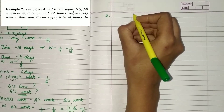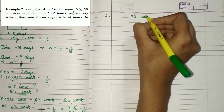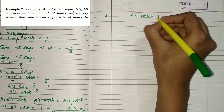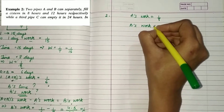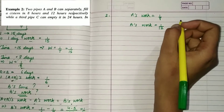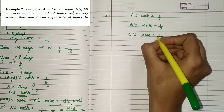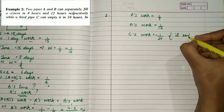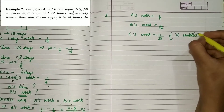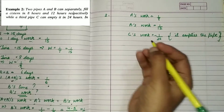The next question is pipes and cisterns related. We have two pipes A and B. Pipe A fills a cistern in 8 hours and pipe B fills it in 12 hours. So A's work is 1 upon 8 and B's work is 1 upon 12. There is also a pipe C which empties the cistern, so its work will be negative.